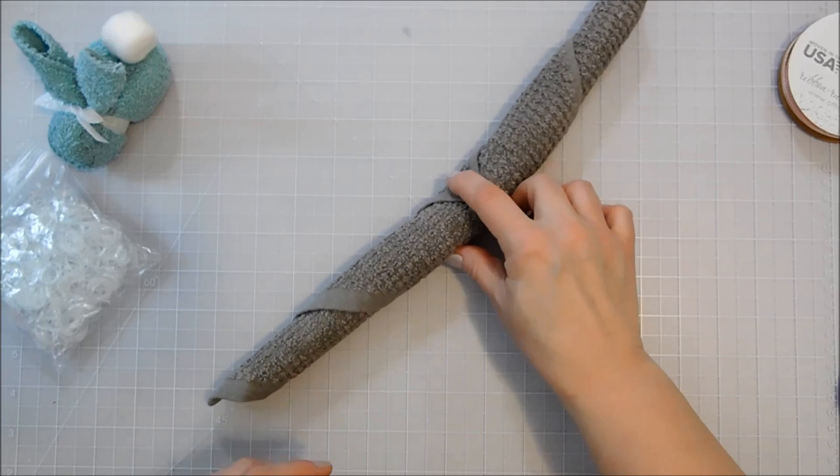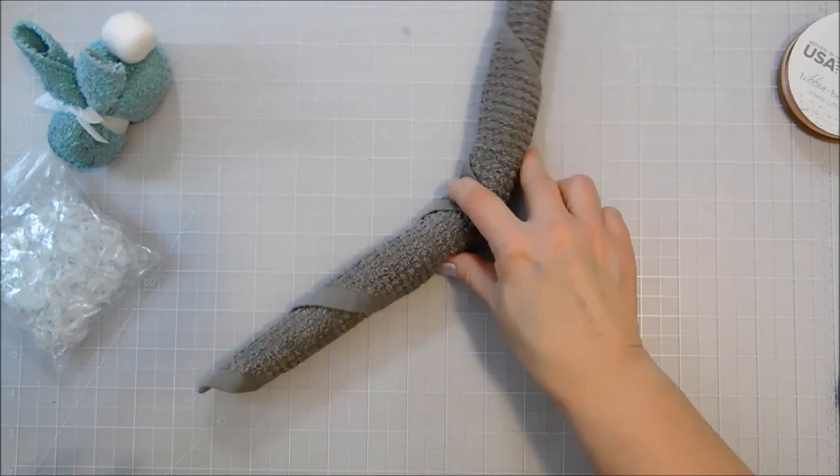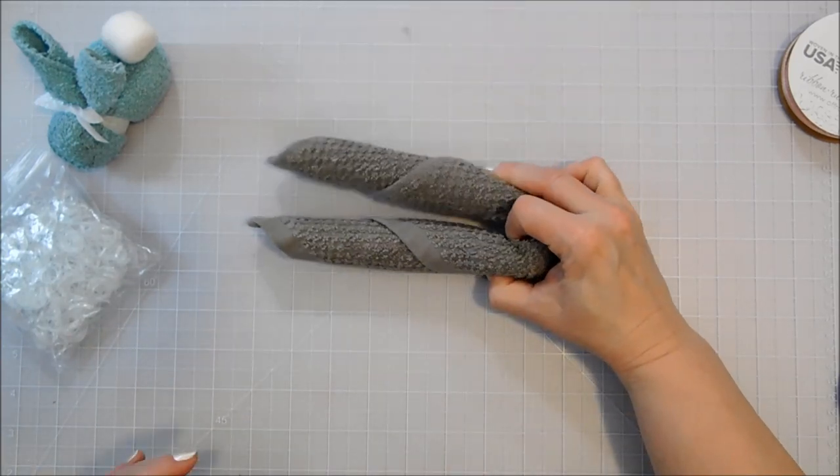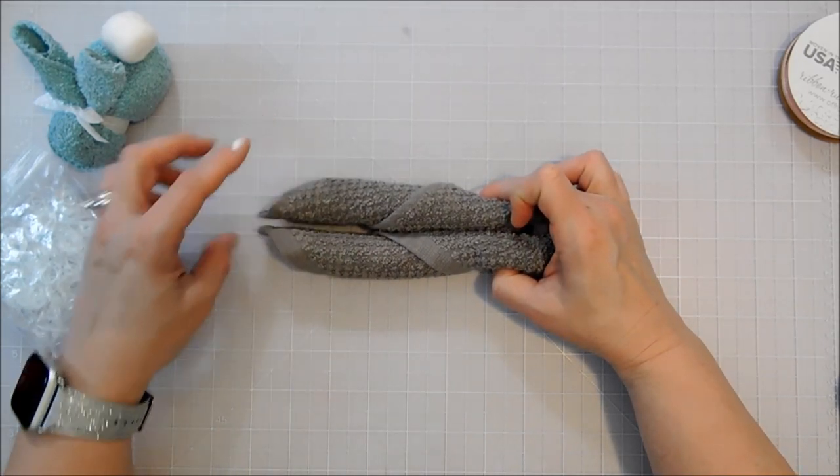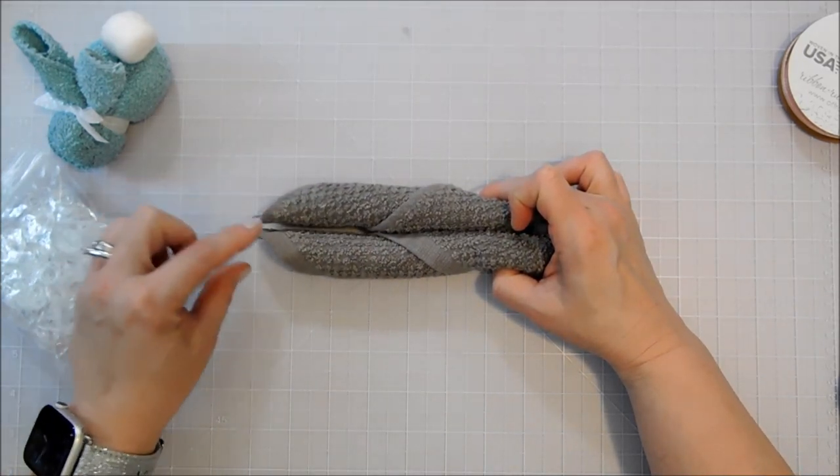And then I'm just going to hold my finger there on that little corner and fold it right in half. If you want to, you can kind of take a minute to make sure the points are even. That's going to be your bunny's ears.